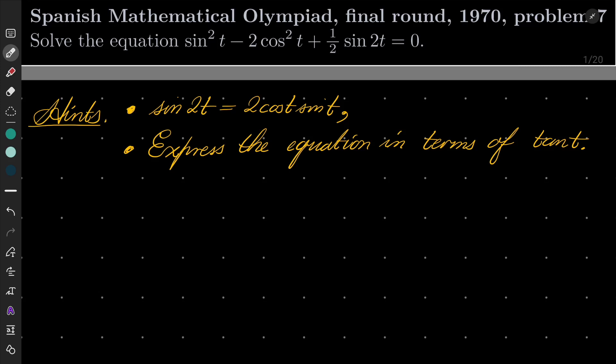So my hints for this problem: first, you should make use of the formula sin(2t) = 2cos(t)sin(t), and then it's possible to express our equation in terms of tangent. Give this problem a try and see you in a minute.